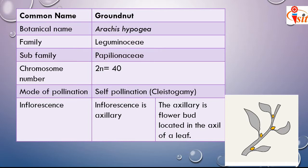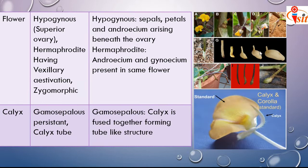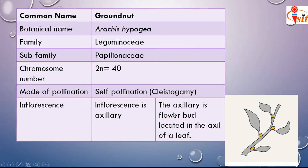The inflorescence of groundnut is axillary. Axillary means the flower bud is located in the axil of the leaf — this is the axil, and the flower bud or inflorescence comes out from that axil.